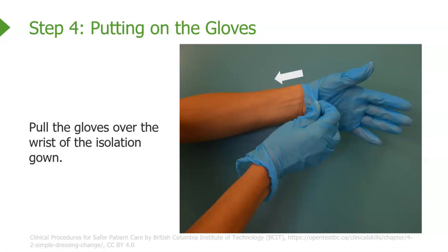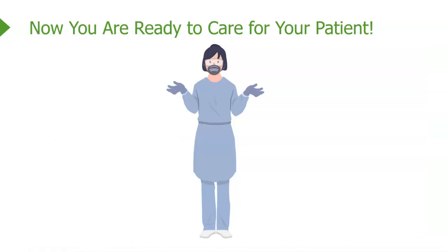Step four is gloves. In this picture you can see how you pull the gloves over the wrist. After you already have your gown on, pull those gloves down over the wrist as shown. Now you're ready to care for the patient.